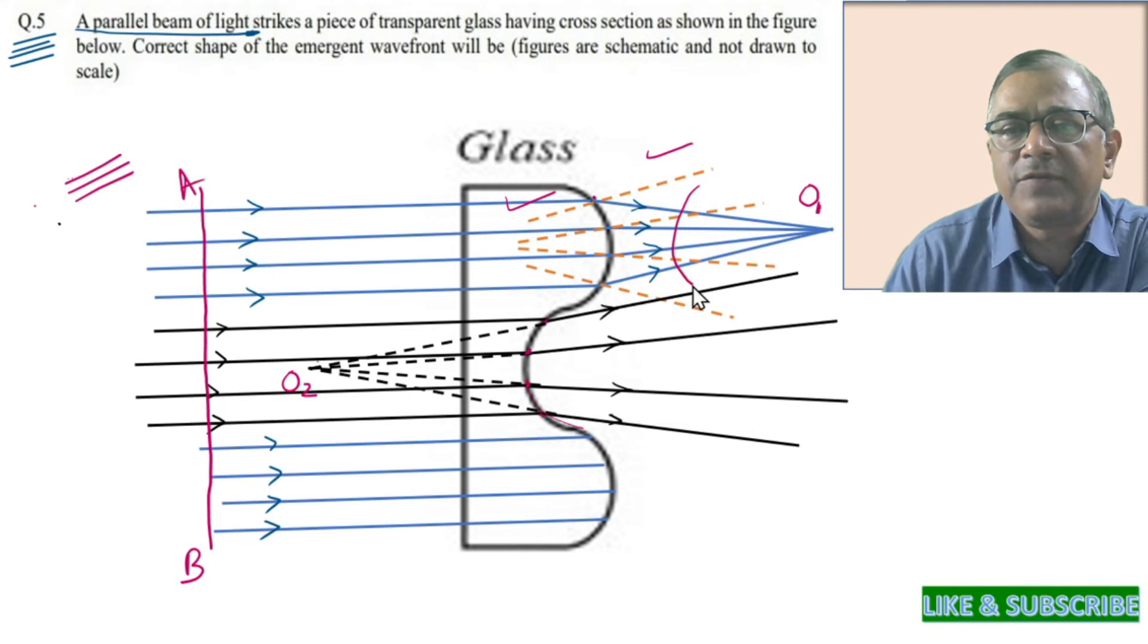The center of this portion, the wavefront is at O1. And as you can see, this wavefront has to be normal to this ray, normal to this ray, and normal to all the rays. Is that okay?